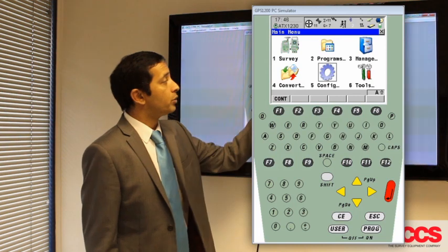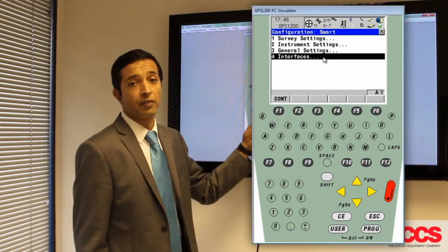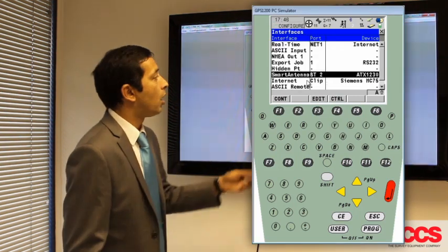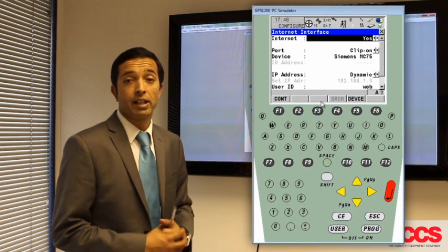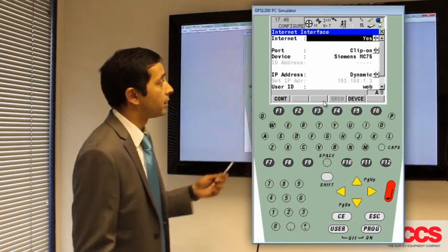then you need to go to configure, interfaces, highlight internet, and then press F3 edit and look at some of the internet interface settings.